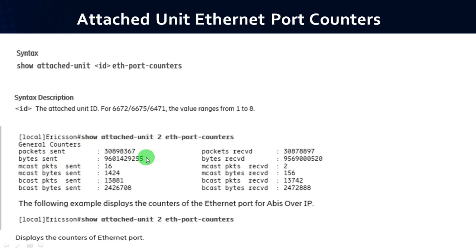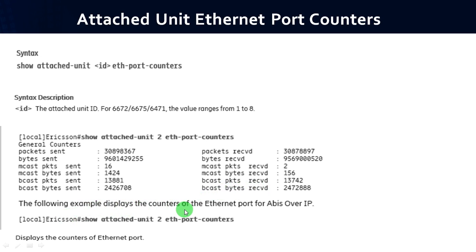From the Ethernet port counters output, you get complete details: how many packets are sent, bytes sent, packets received, bytes received, multicast packets sent, multicast bytes received, broadcast packets received, and broadcast bytes received. This example displays the counters of the Ethernet port for ABIS over IP.